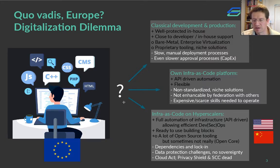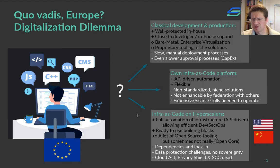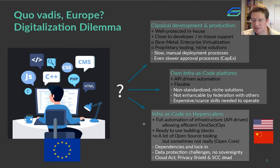On the other hand, a lot of companies obviously have made the move to an agile CI/CD style of development. They typically work on hyperscalers. You can use the full automation of such hyperscaler infrastructure. It's API-driven and you can really use best-of-class DevOps or DevSecOps operations principles. Typically these infrastructures also come with a number of ready-to-use building blocks and there's a significant set of open source tooling around them — though sometimes it's not really open source.